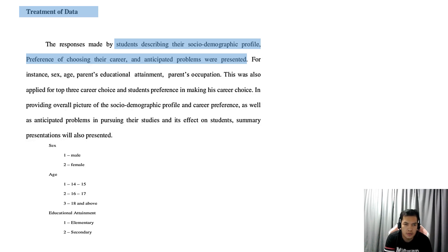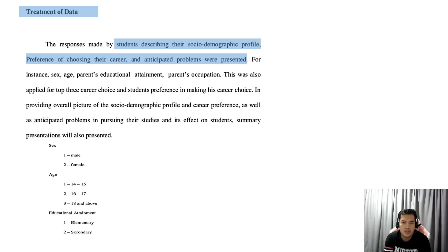Right now is the preview of the sex category: 1 for male, 2 for female. Age: 1 for 14-15, 2 is 16-17, and 3 is 18 and above. For educational attainment, we have 1 for elementary and 2 for secondary.